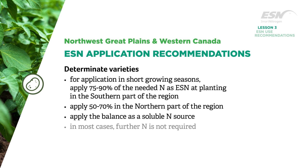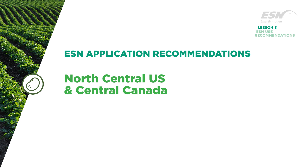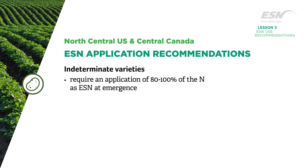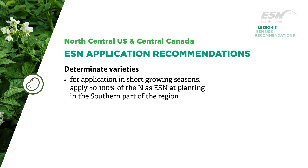Indeterminate varieties in the North Central United States and Central Canada require an application of 80 to 100 percent of the nitrogen as ESN at emergence, with the balance as a soluble nitrogen source. For determinate varieties and/or short growing seasons, apply 80 to 100 percent of the nitrogen as ESN at planting in the southern part of the region.